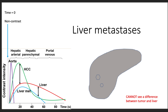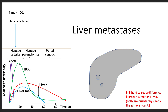Then we get into the arterial phase. The liver is getting a little brighter, and the liver metastases are getting a little brighter as well. But you can see it's still hard to tell the difference too much between them, because both got brighter by a pretty similar amount.